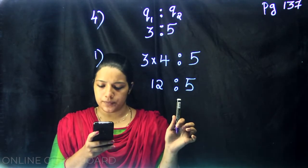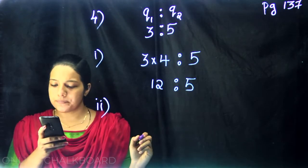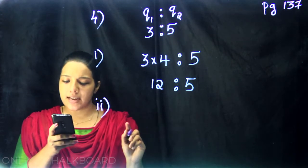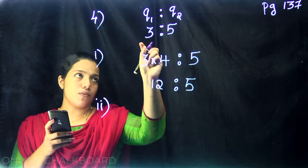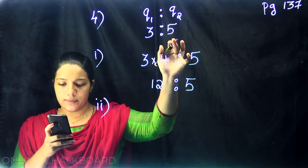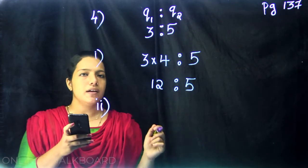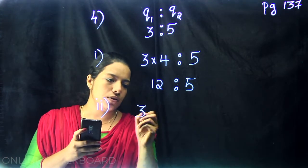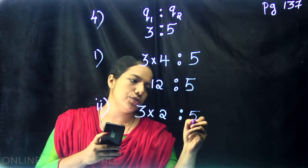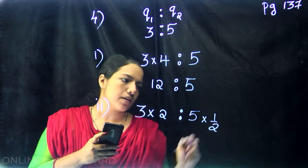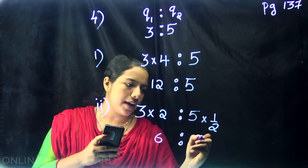Now the second part: if the smaller is doubled and the larger is halved, what would the ratio be? The smaller one is 3, doubled means 3 into 2. The larger one is 5, halved means 5 into 1 by 2. So the ratio is 3 into 2, which is 6, to 5 into 1 by 2, which is 5 by 2.